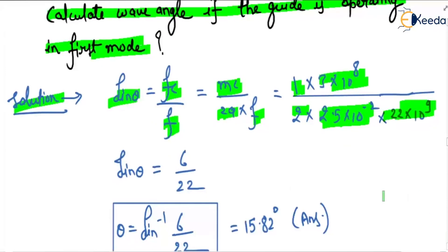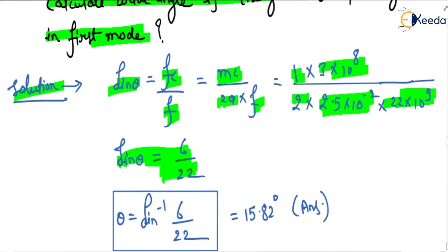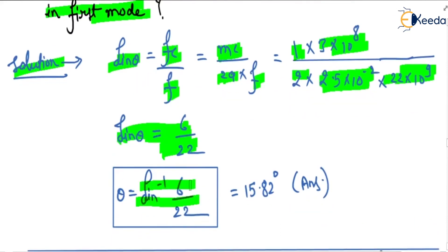which is 22 into 10 to the power 9. So sin theta equals 6 by 22, so theta is sin inverse 6 by 22, which equals 15.82 degrees, which is our answer.